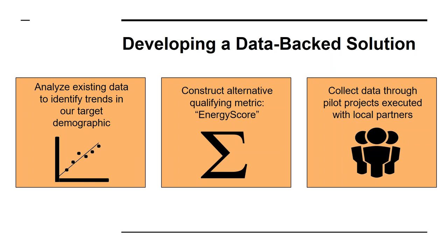The final stage will be collecting data through pilot projects with local partners — qualifying customers for community solar pilot projects using the energy score to broaden inclusion, then tracking participants' payment behavior and analyzing churn or dropout rates compared to higher income individuals. This approach will allow Solstice to understand the state of play, develop the alternative score, and collect back-end data through these pilots to validate their hypothesis.